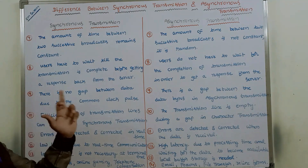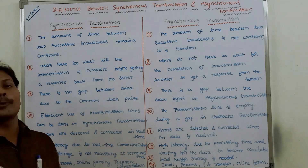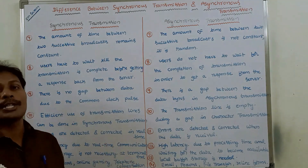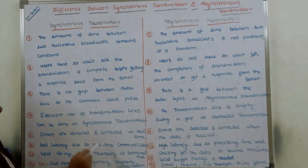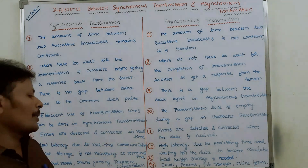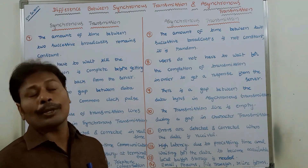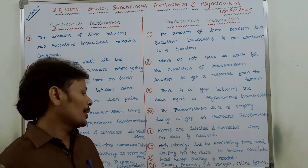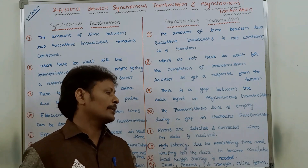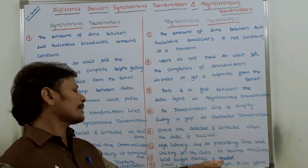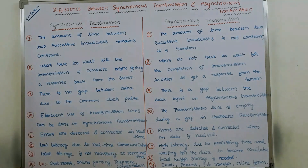Examples: synchronous transmission is used in chat rooms, telephone conversations, and online gaming. Whereas asynchronous transmission is used in emails and forums, file transfer, and online forms.